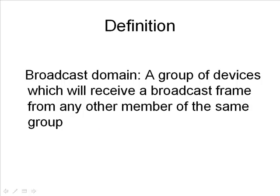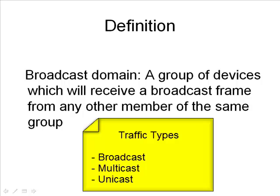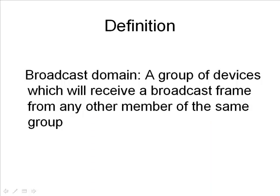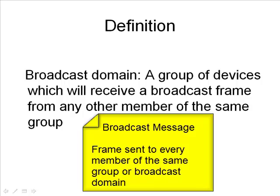A broadcast domain is defined as follows: a group of devices which will receive a broadcast frame from any other member of the same group. So you have a group of devices, and if any one of them sources a broadcast message, every other member of that group will receive it — and that is your broadcast domain. There are a few types of traffic: broadcast, multicast, and unicast. We're focusing just on broadcast. A broadcast message is a message which is sent to every other device in a particular group.